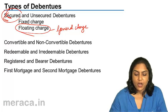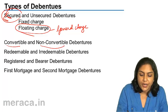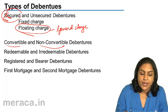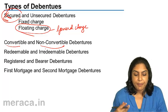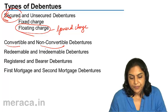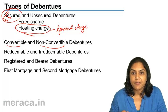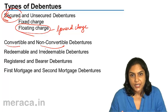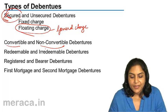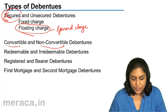Debentures may also be convertible or non-convertible. Convertible would mean they can be converted to shares. If they do not have an option to be converted to shares after a period of time, then they are called non-convertible debentures.